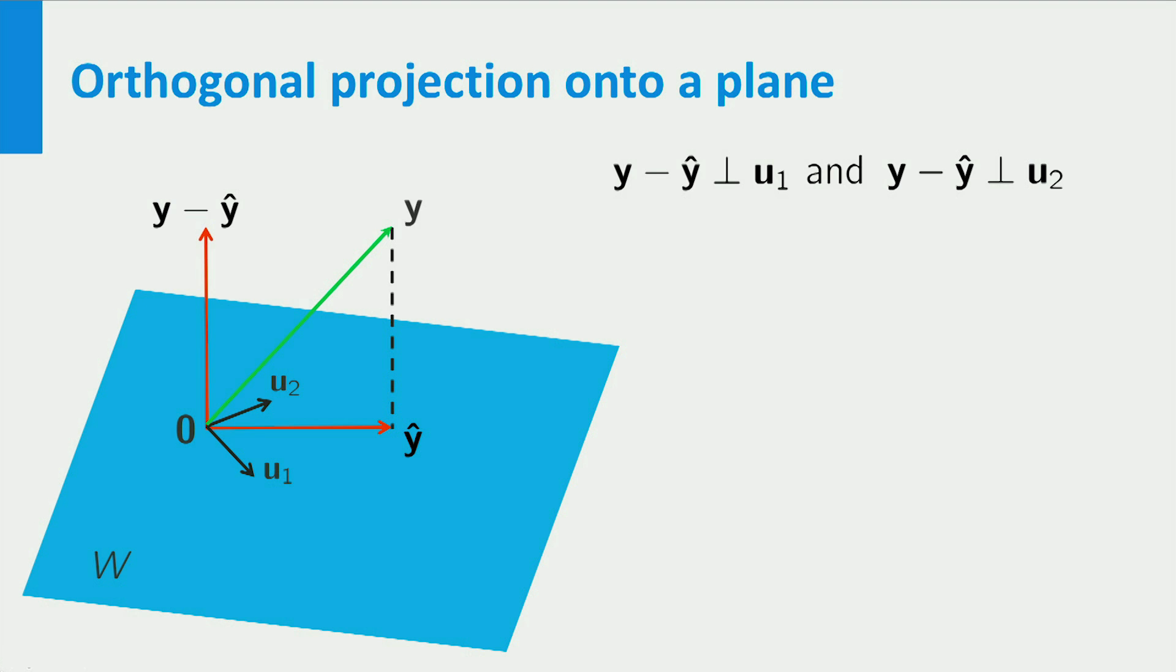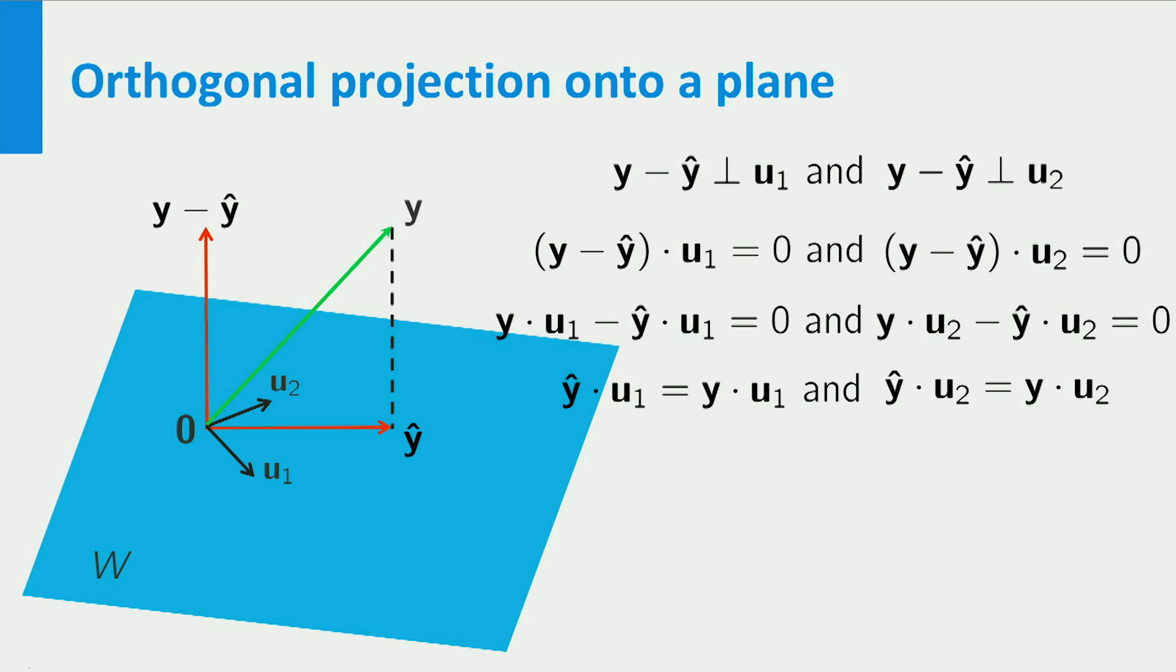In formula this looks like this. The inner products of Y minus ŷ with both u1 and u2 are equal to zero. From this it follows that the inner product of ŷ with u1 is equal to the inner product of Y with u1, and similar for u2.